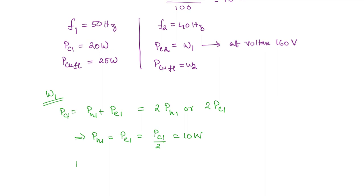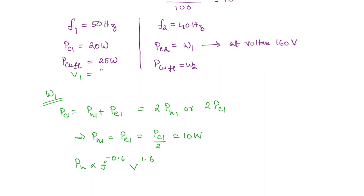Considering the hysteresis loss, it is proportional to frequency to the power (1 − x) and V to the power x, where x = 1.6. So hysteresis loss is proportional to F to the power −0.6 and V to the power 1.6. In the first case, F1 = 50 hertz at rated voltage. We take the HV side rated voltage as 200 volts to get a common reference for both tests.